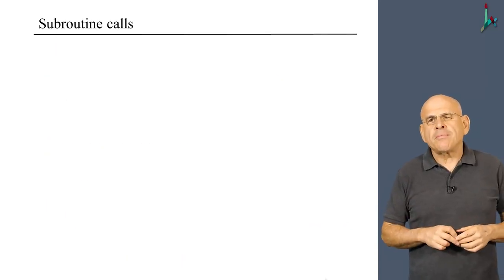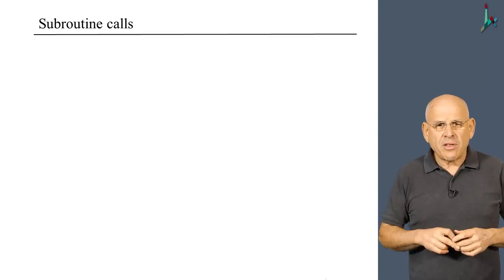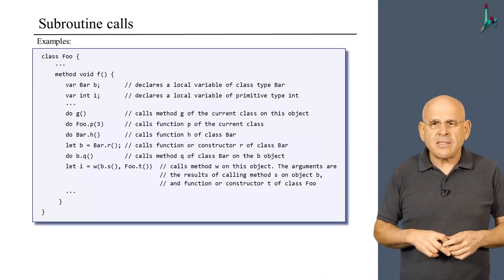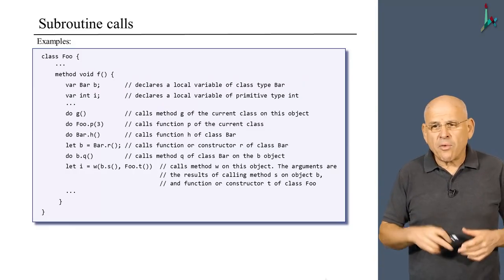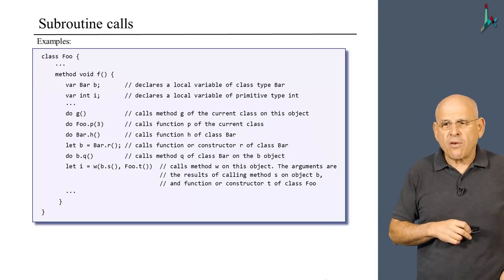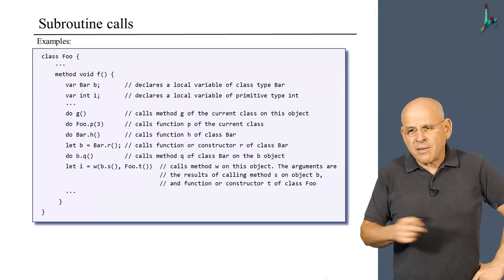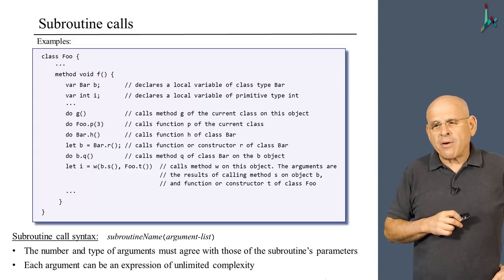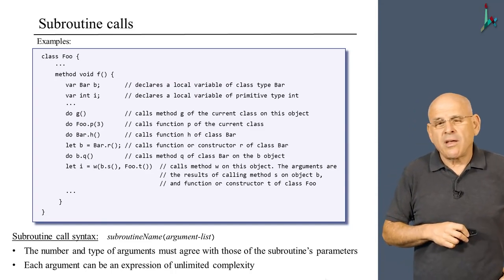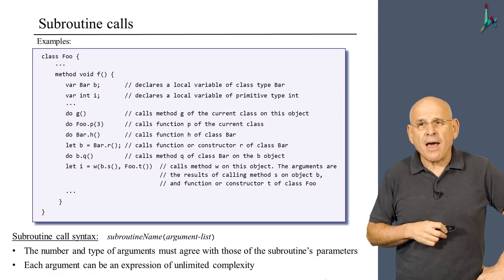Subroutine calls are a little bit confusing because different languages have different rules, although you get used to it very quickly. Instead of giving you all the rules, I gave a set of examples that are sufficiently rich to refer to many different kinds of subroutine calls in Jack. The most important thing to remember is that the number and type of arguments you supply must match those of the subroutine signature.